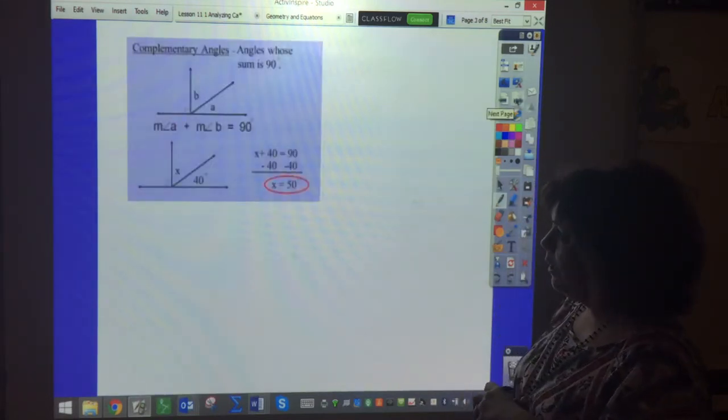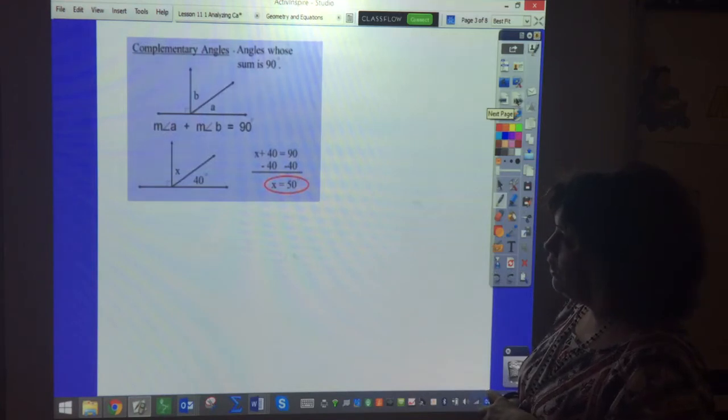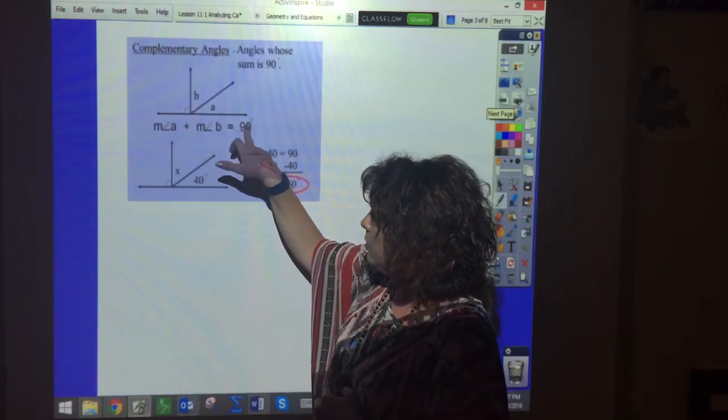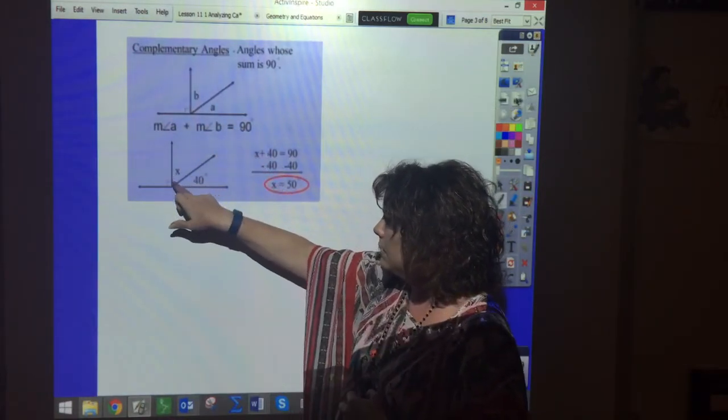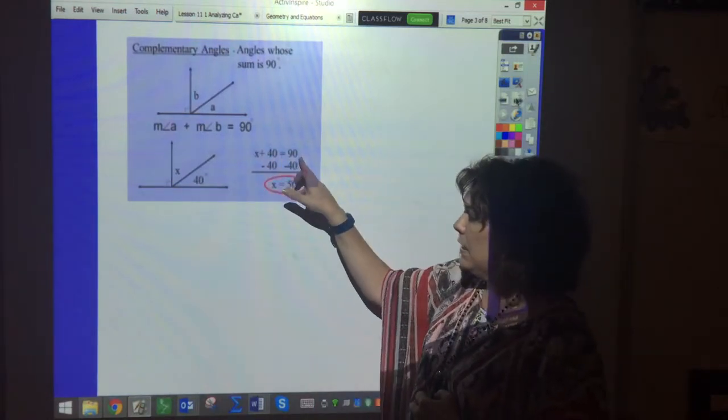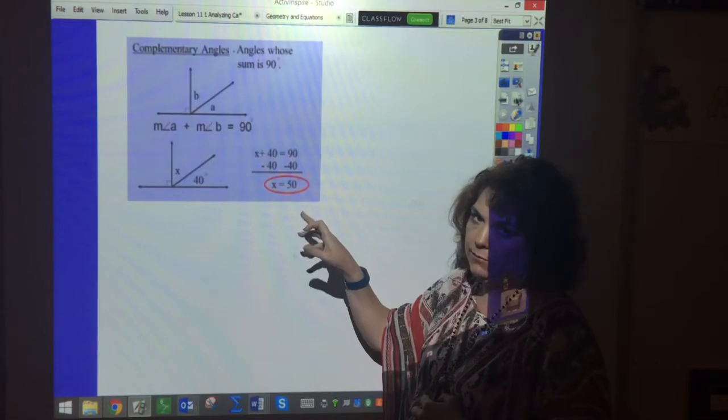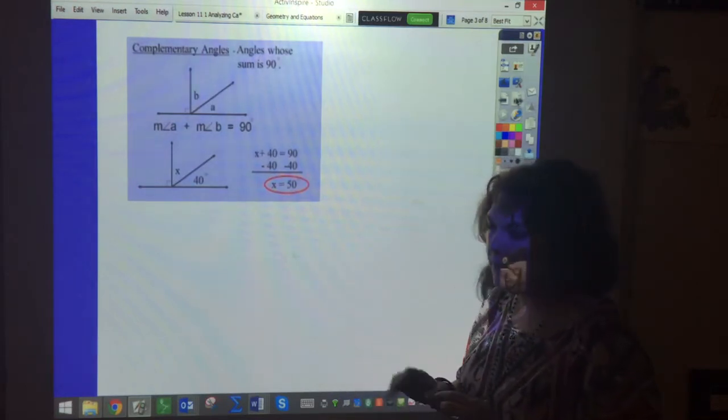So complementary always add up to 90 and so this is saying that angle A plus angle B equals 90. So angle X plus 40 is going to equal 90 and then you subtract the 40s and so you get X equals 50. So it's a simple one-step equation.